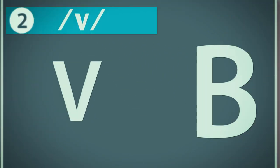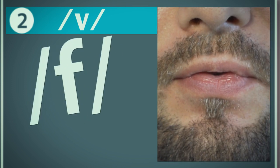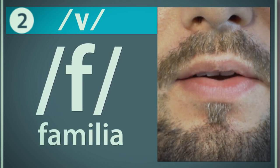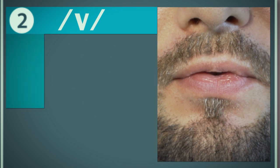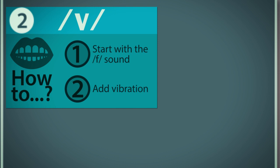In Spanish, the sounds for the letters V and B are very similar, but this is not true in English. The letter V is more similar to the letter F. To make the V phoneme, you need to start with the sound, as in the Spanish word familia, for example. Once you have the sound, simply add vibration from your vocal cords to make the sound.